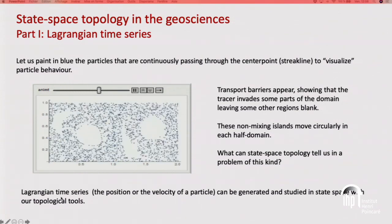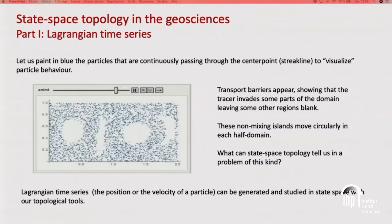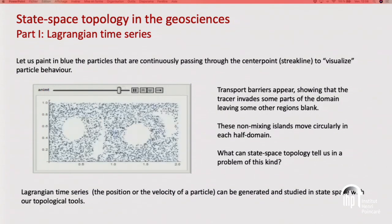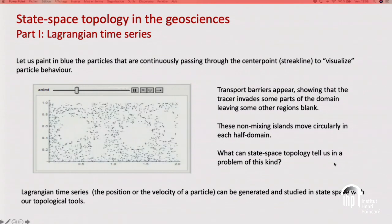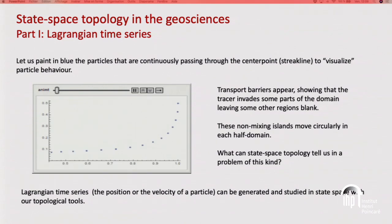If you look at the blank regions in the streak line visualization, transport barriers appear: the passive tracer invades some parts of the domain but leaves other parts blank. Using a metaphor: if this were a washing machine and laundry soap were injected in the middle, and you put a sock in one of the circular regions, your sock does not get washed with soap — it gets washed with water. The same happens with the triangular regions orbiting around the circular blank regions. What can state-space topology tell us in a problem of this kind? We start with time series of a particle's position or velocity, embed it to generate a point cloud, and analyze its topology.